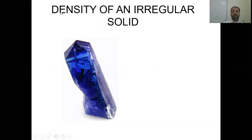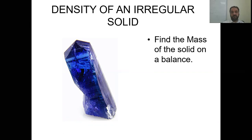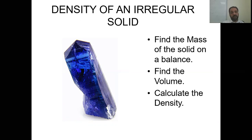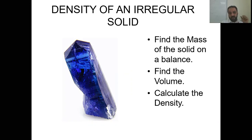For an irregular shape, the density formula is the same: density equals mass by volume. Mass can be found using a balance. For volume, since you cannot use a simple mathematical formula for irregular shapes, you can place the object in water using a measuring cylinder to find the volume by water displacement. Once you know the mass and volume, just divide to get density.